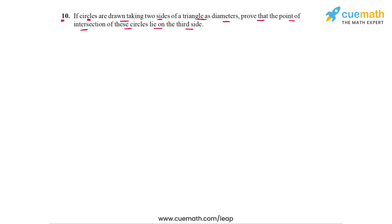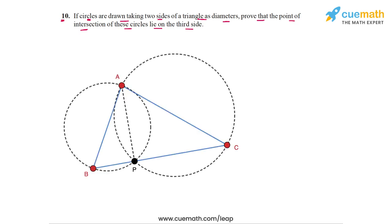Coming back to our question, let's write out the proof. Here's a figure taken from the simulation. We have to prove that point P lies on BC, so we will prove that angle BPC is 180 degrees, which means that BPC is a straight line — and that would mean that P lies on BC.